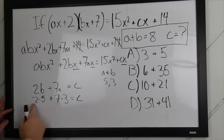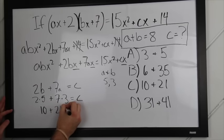Remember, that's what we're looking for. So, 2 times 5, of course, is 10 plus 7 times 3 is 21. That equals 31, which equals c.